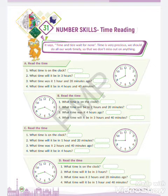What time was it 4 hours ago? It was 4:20. We can't say about AM and PM because the problem is not giving the time as AM or PM. Next: what time will it be in 3 hours and 40 minutes? After 8:20, 3 hours plus 40 minutes will be added.